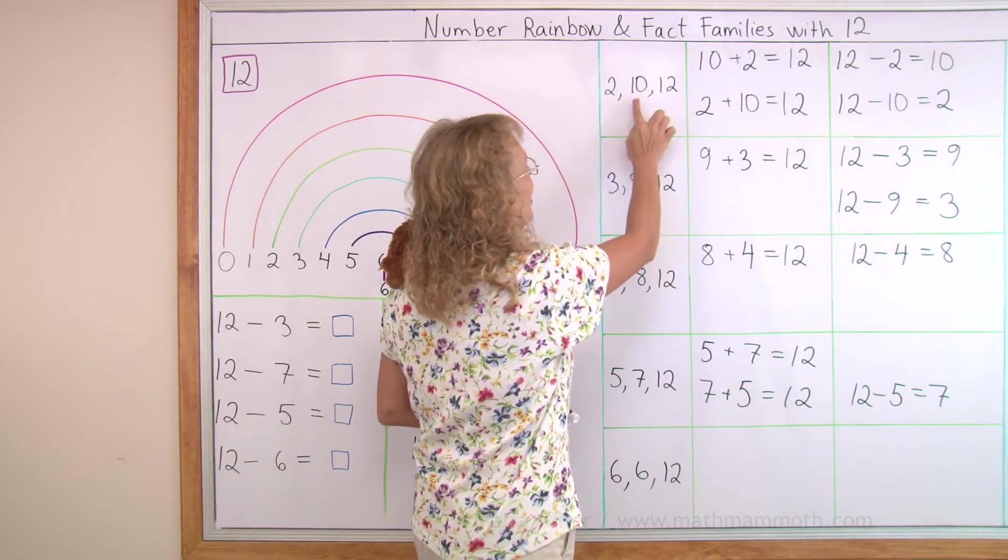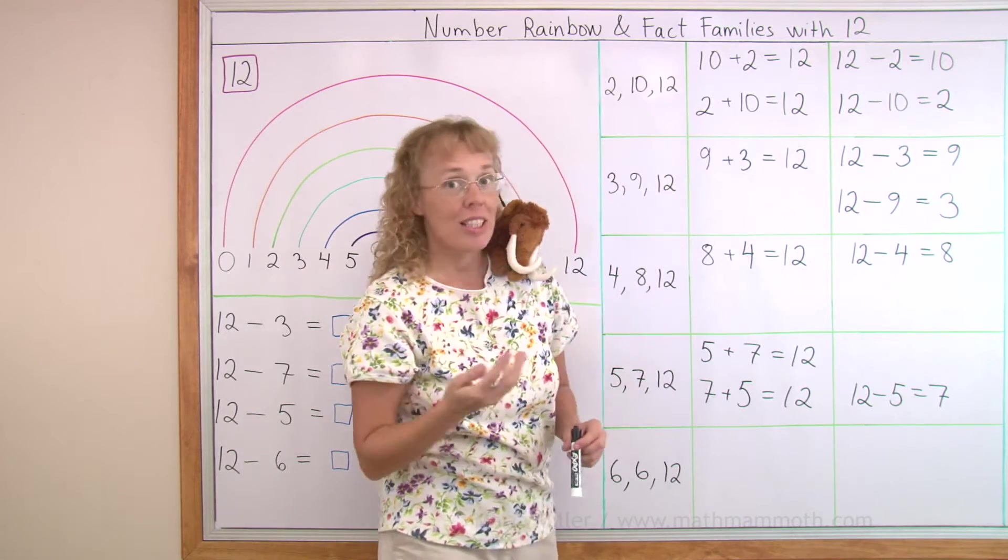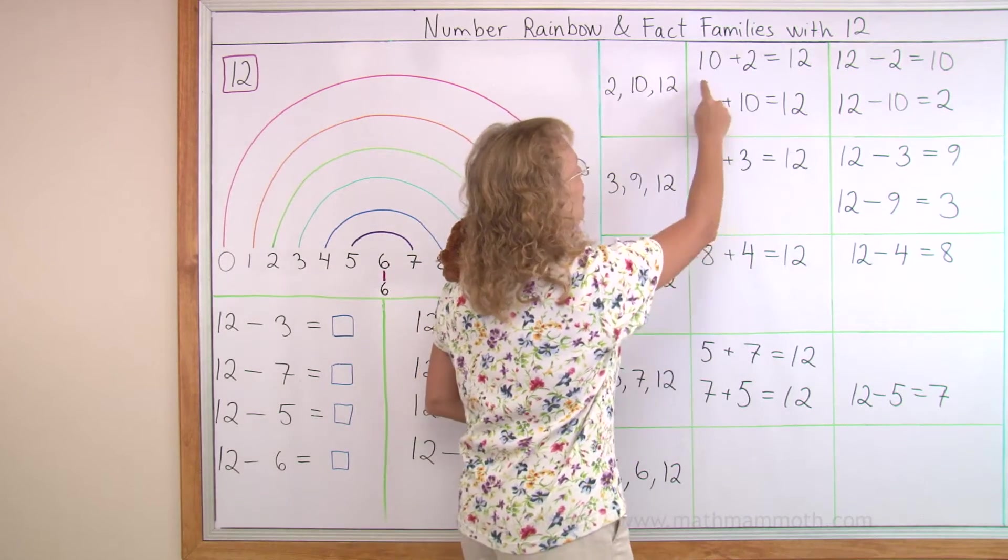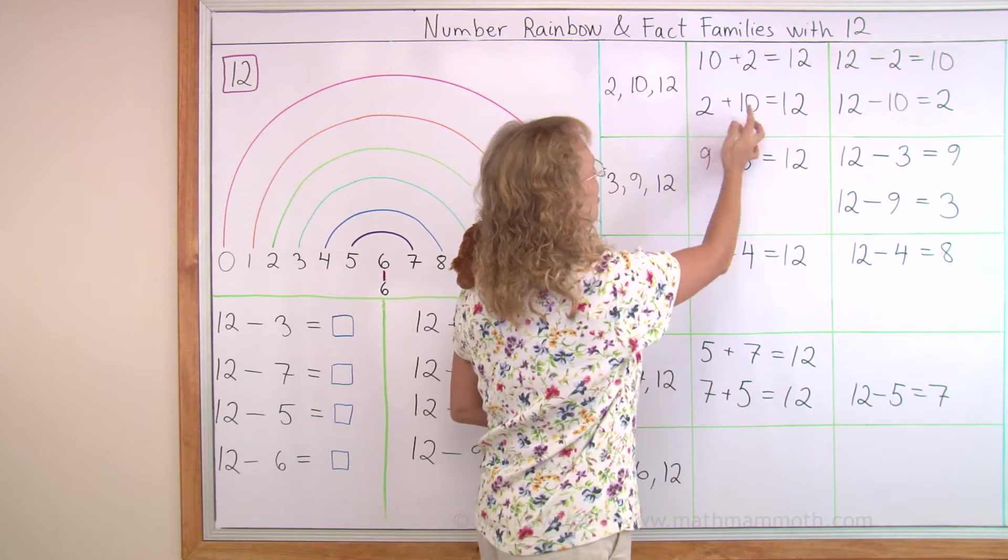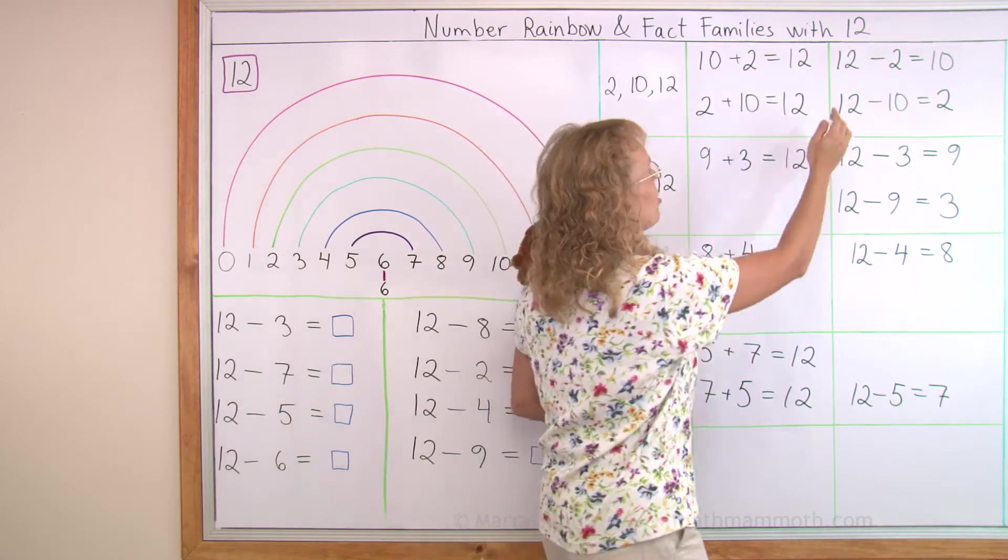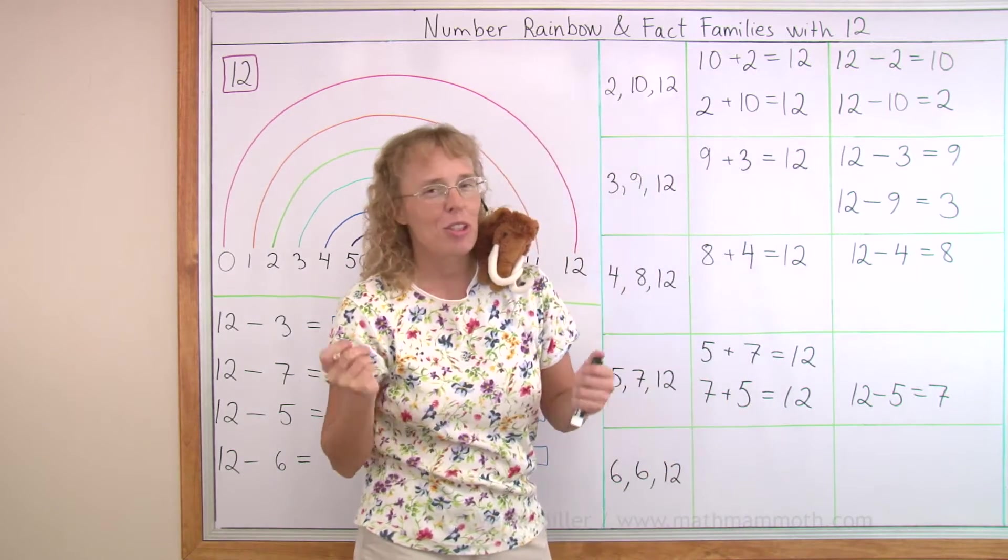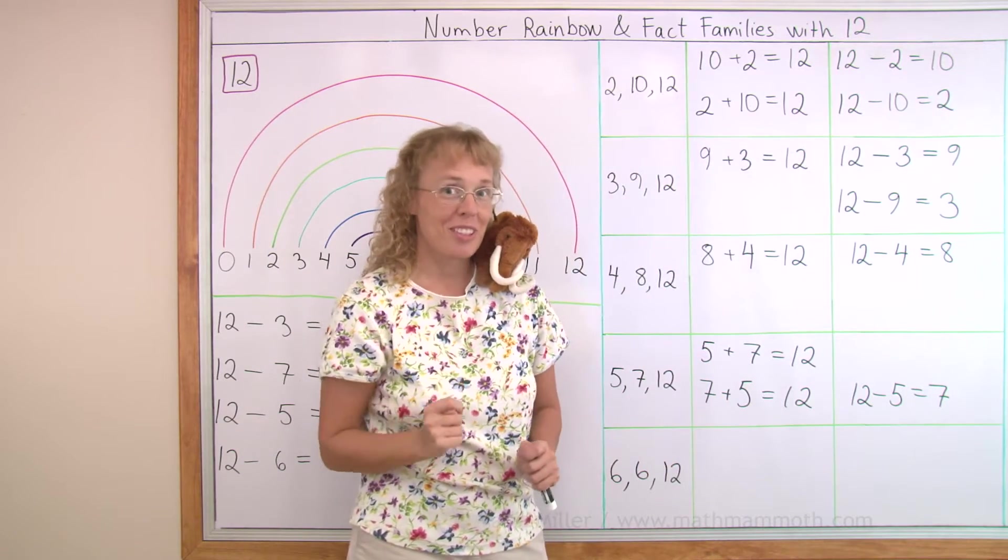Okay, we have 2 and 10 and 12, the three numbers that I use to make the fact family. And here we have 10 and 2, they make 12, right? And then the other addition, where we switch the numbers. And then the two subtractions over here, as you have learned. I'm sure you have learned about fact families by this point a lot.